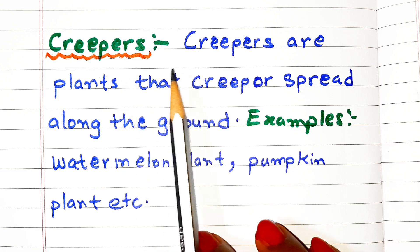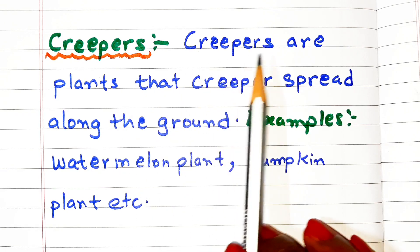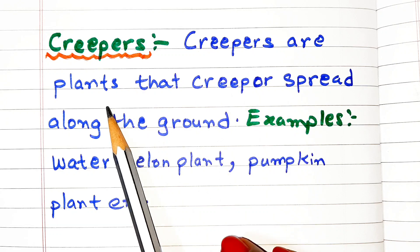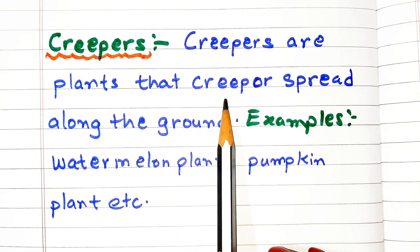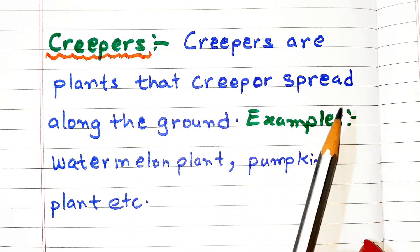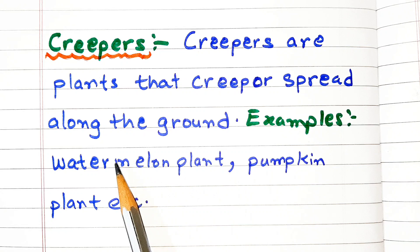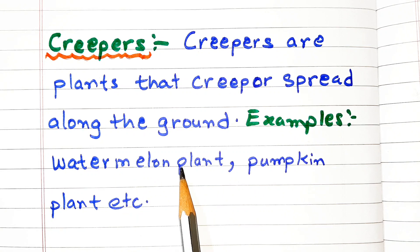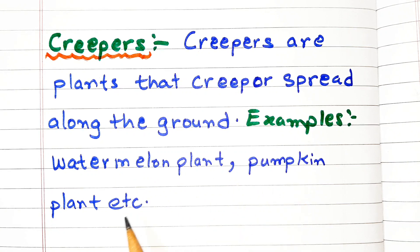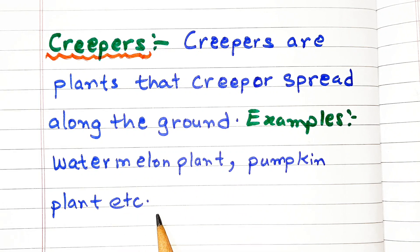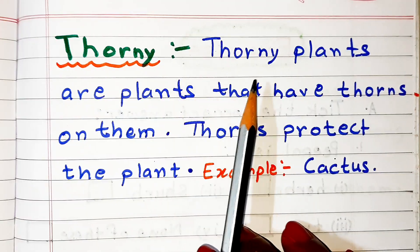Creepers are plants that creep or spread along the ground. Examples: watermelon plant, pumpkin plant, etc.